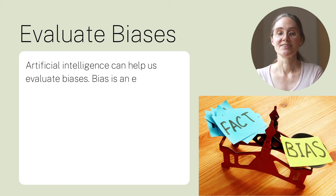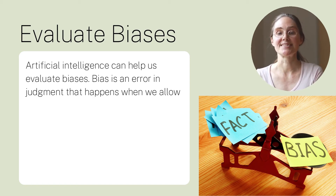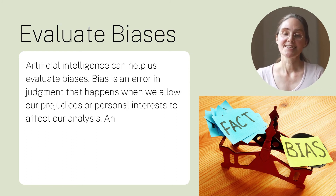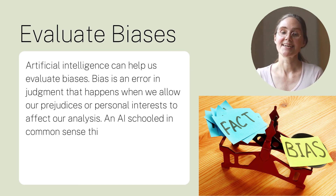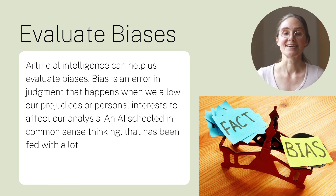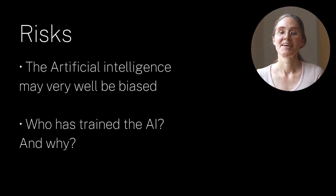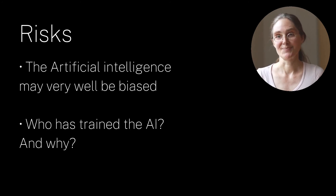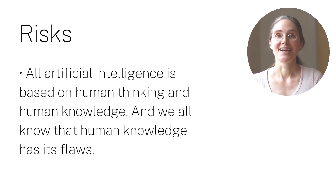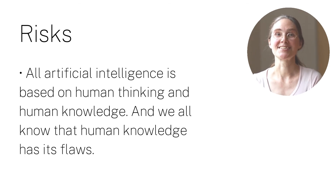Artificial intelligence can help us evaluate biases. Bias is an error in judgment that happens when we allow our prejudices or personal interests to affect our analysis. An artificial intelligence schooled in common sense thinking that has been fed with a lot of data can help us find biases. But of course there are many risks — the artificial intelligence may very well be biased. Who has trained the artificial intelligence and why? All artificial intelligence is based on human thinking and human knowledge, and we all know that human knowledge has its flaws.